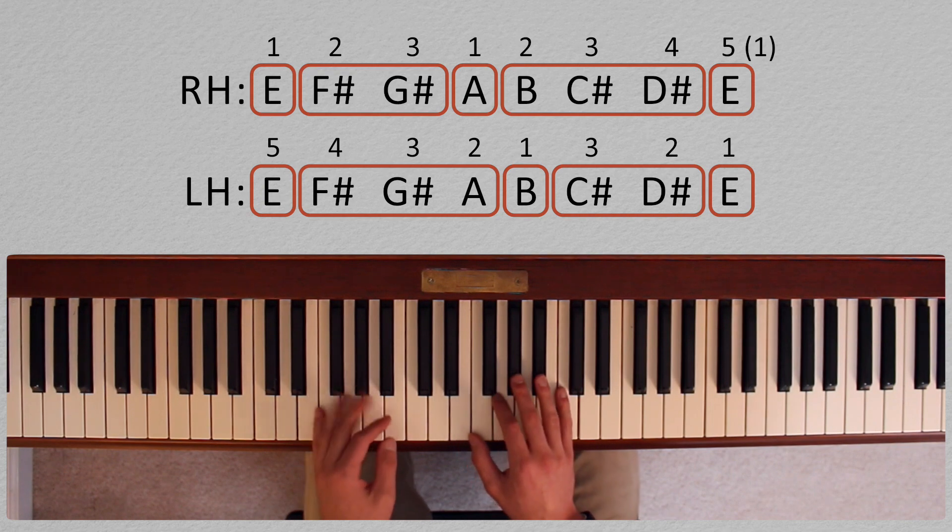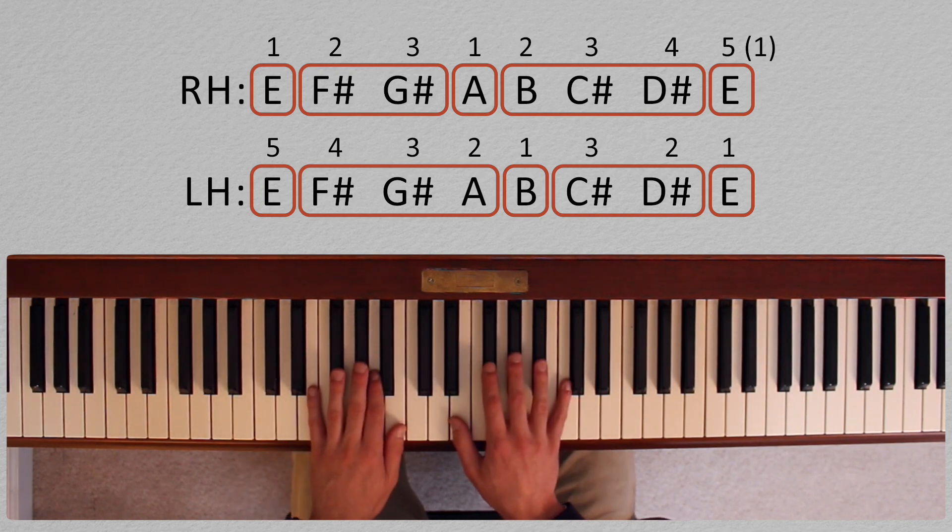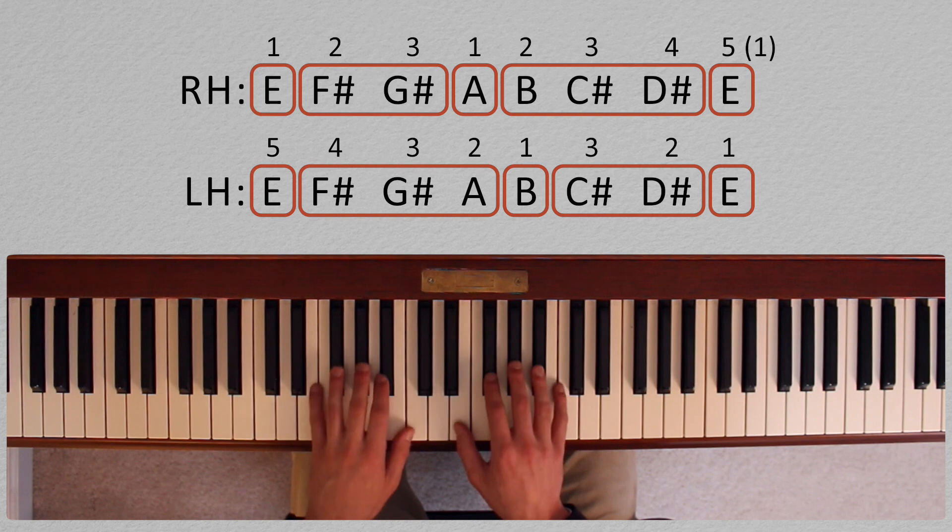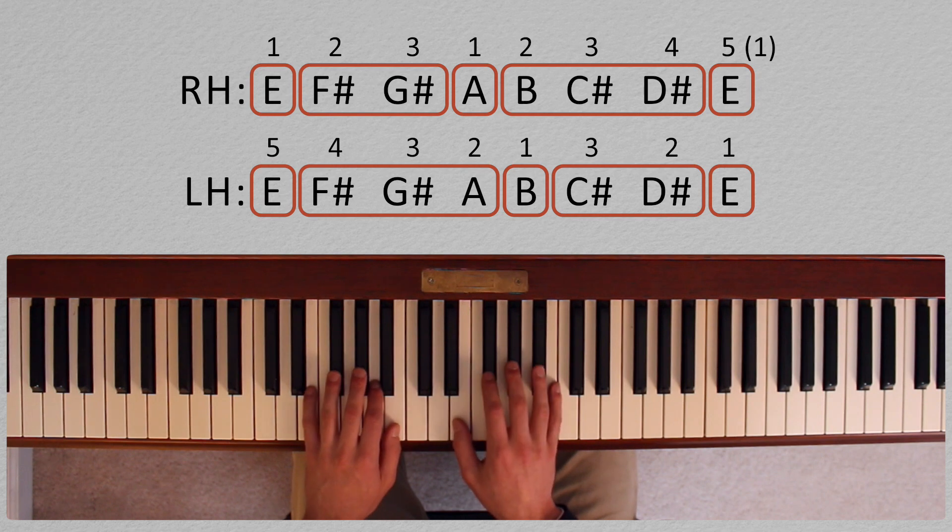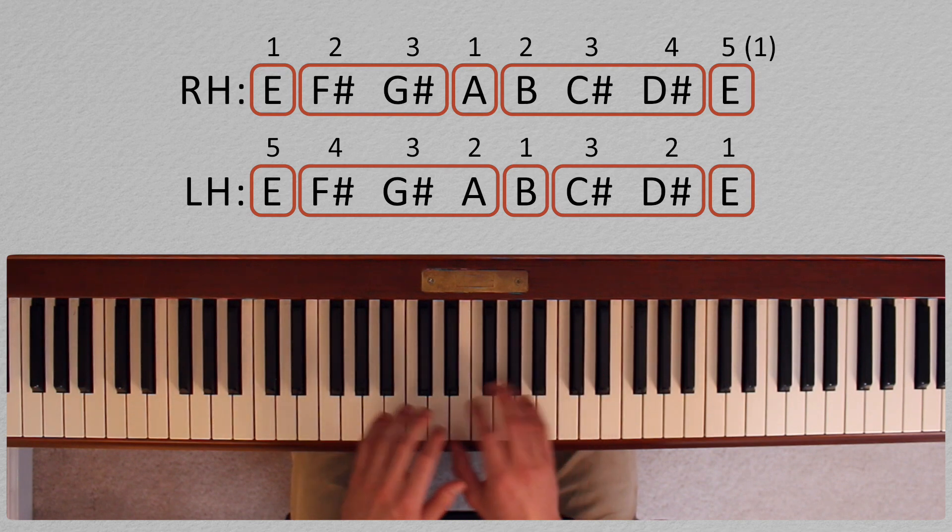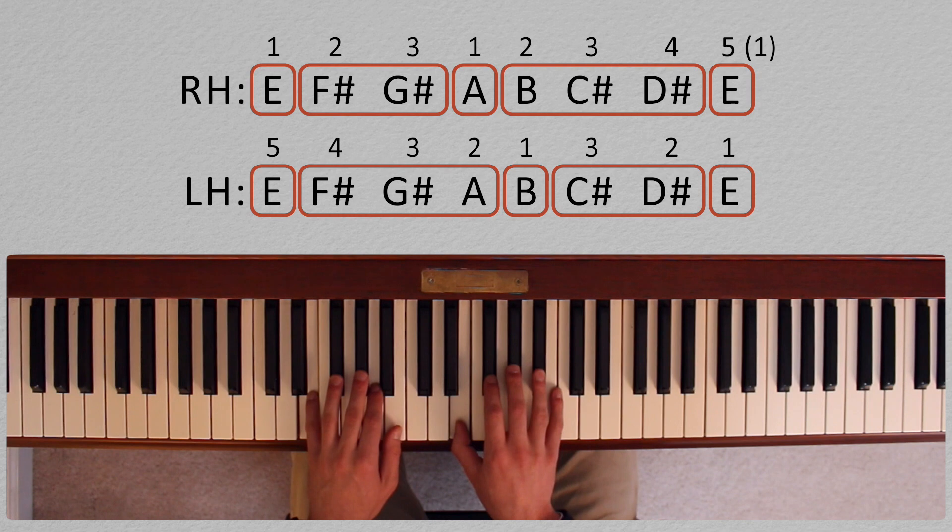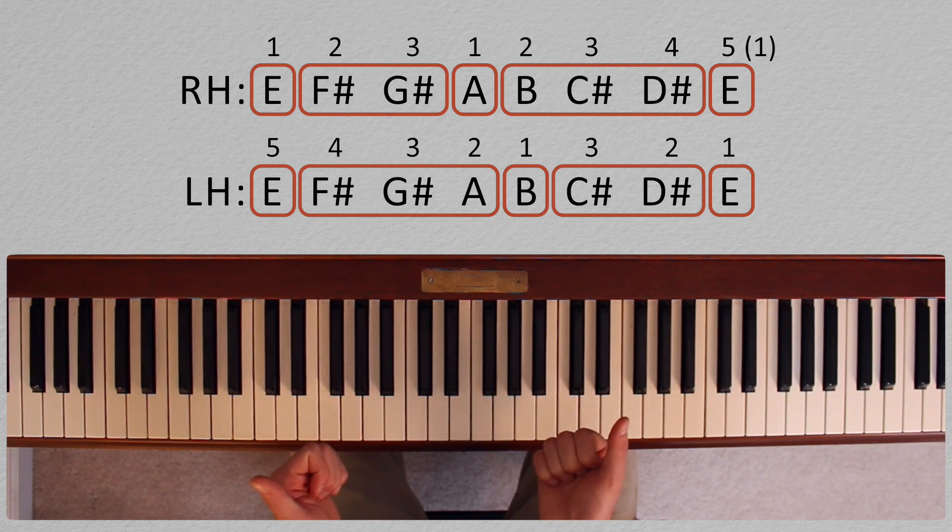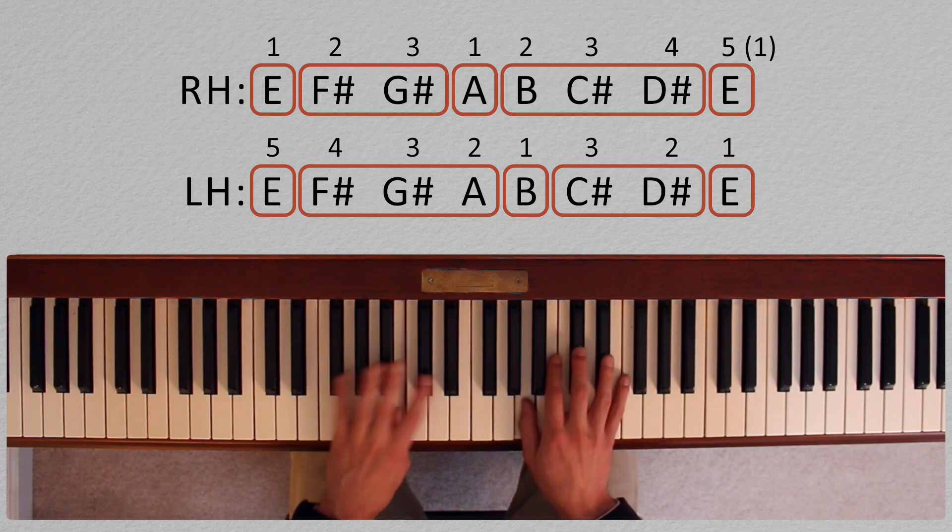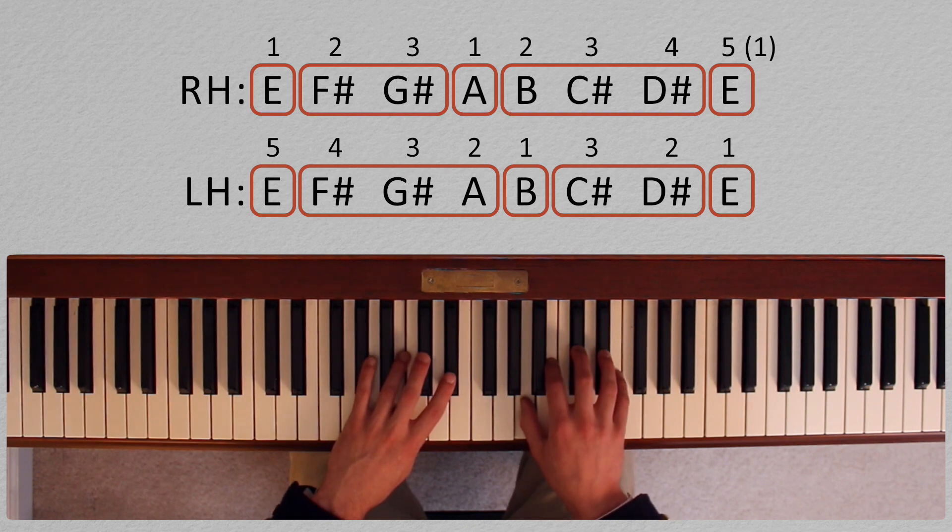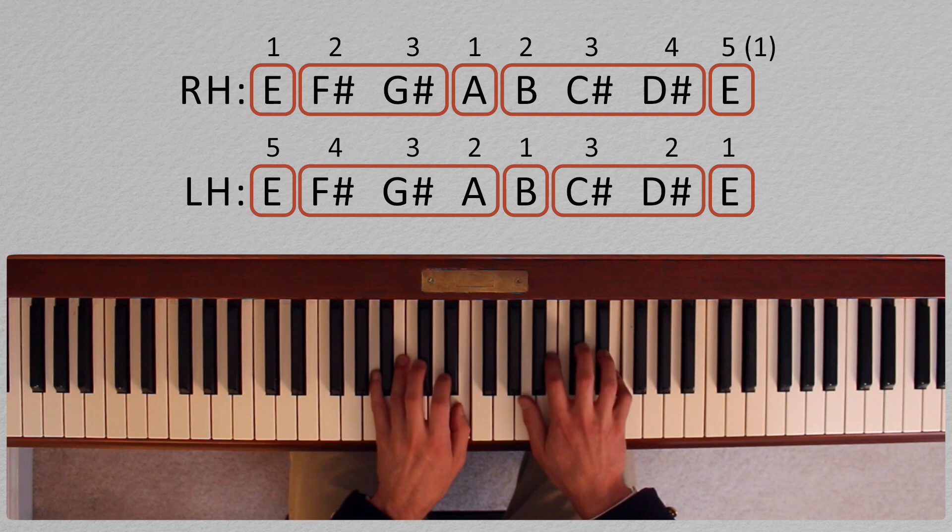So how do we decide what to put in a block and what to play single? What I like to do is start with the first note, then play everything up until you have to do a pivot. The thumbs are where we pivot in E major. Then we put the thumb down and play the rest of the scale.